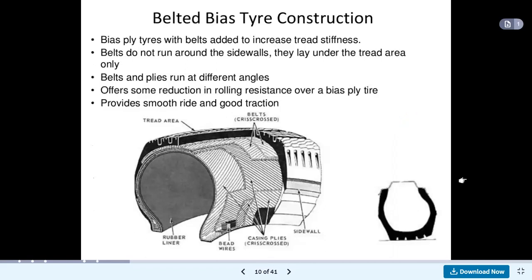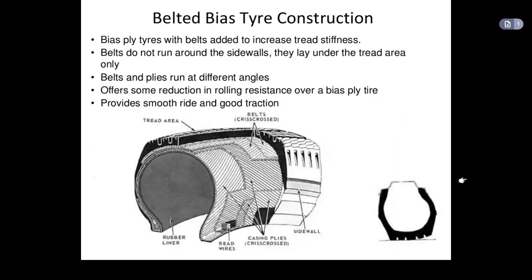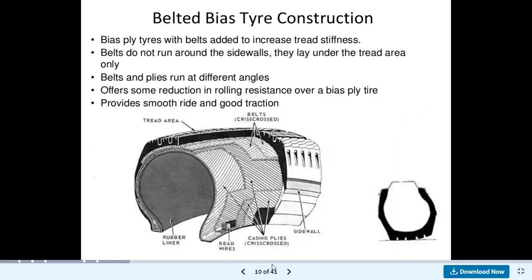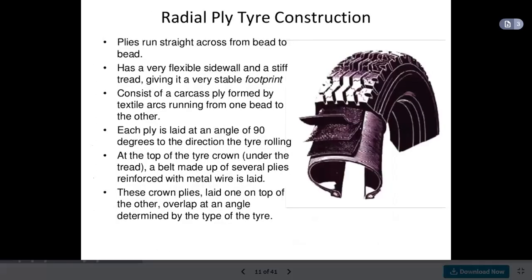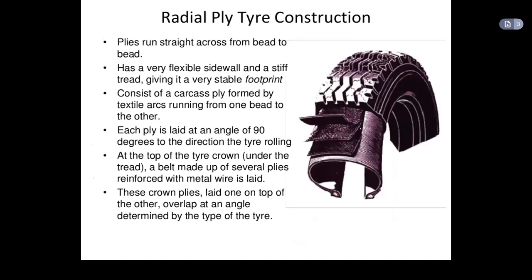The next type is a bias ply tyre with belts added to increase tread stiffness. Belts do not run around the sidewalls — they lay under the tread area only. Belts and plies run at different angles, offering some reduction in rolling resistance over a standard bias ply tyre, and providing a smooth ride and good traction. In this type, plies run straight across from bead to bead, giving a very flexible sidewall and stiff tread, resulting in a very stable footprint.